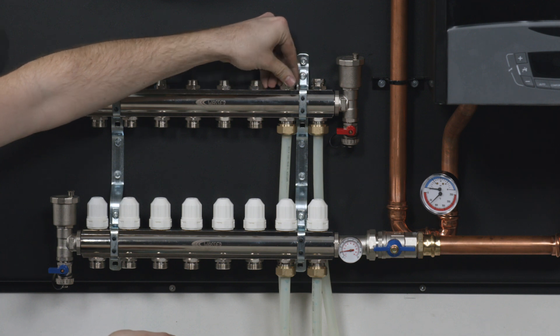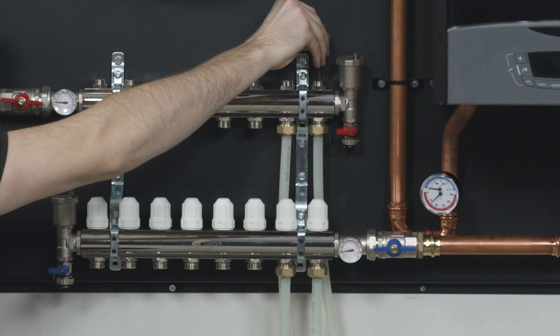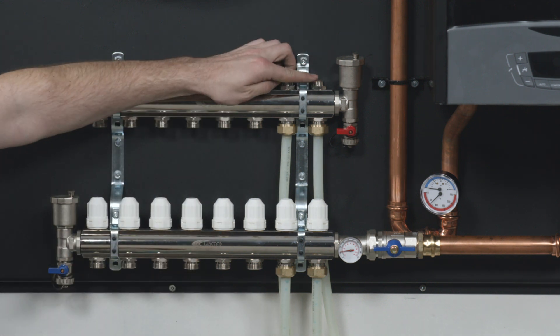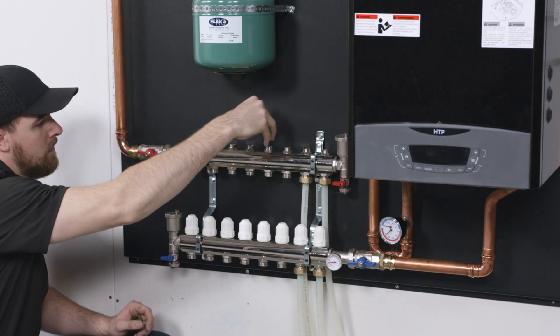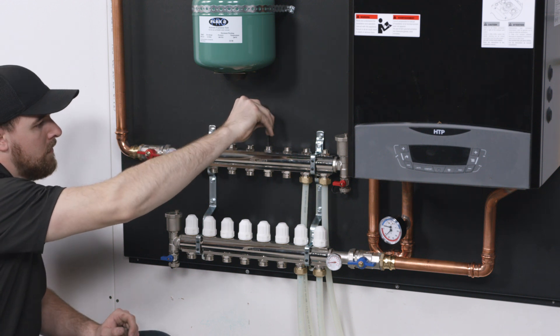Open the manifold valves with an Allen key under the hex cap on the manifold. It will be fully open when it is flush with the top of the threaded seat. With the Allen key, close any unused manifold ports and cap the open ports.